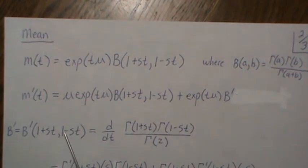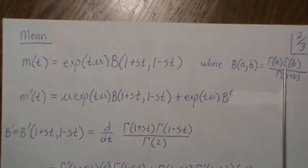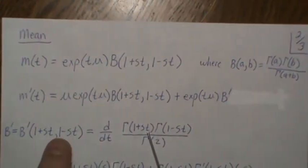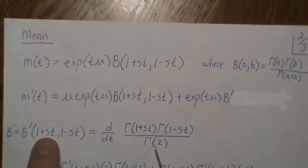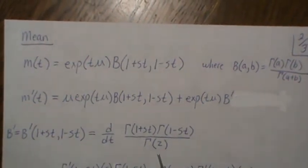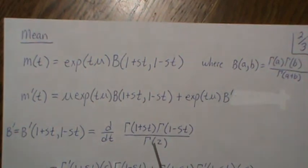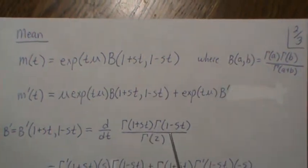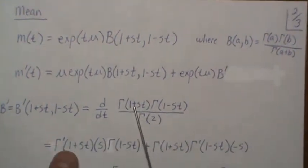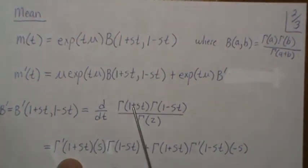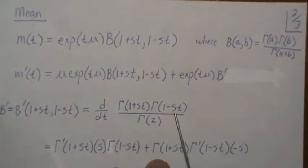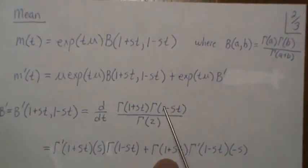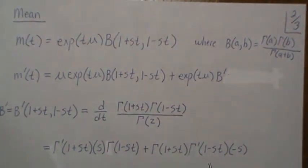B prime is the derivative of this beta function with respect to t. Plugging in what the beta function is: we have gamma of (1 plus st) times gamma of (1 minus st) over gamma of 2. The st and minus st cancel in the sum, giving gamma of 2, which equals 1. Taking the derivative: the first term's derivative, with the chain rule giving an S, times the second term, plus the first term times the derivative of the second term, again with chain rule.